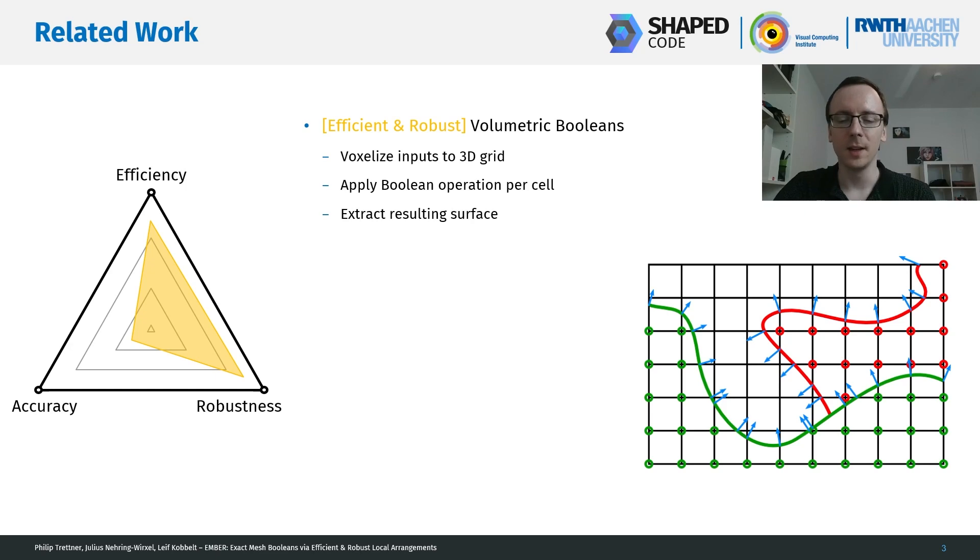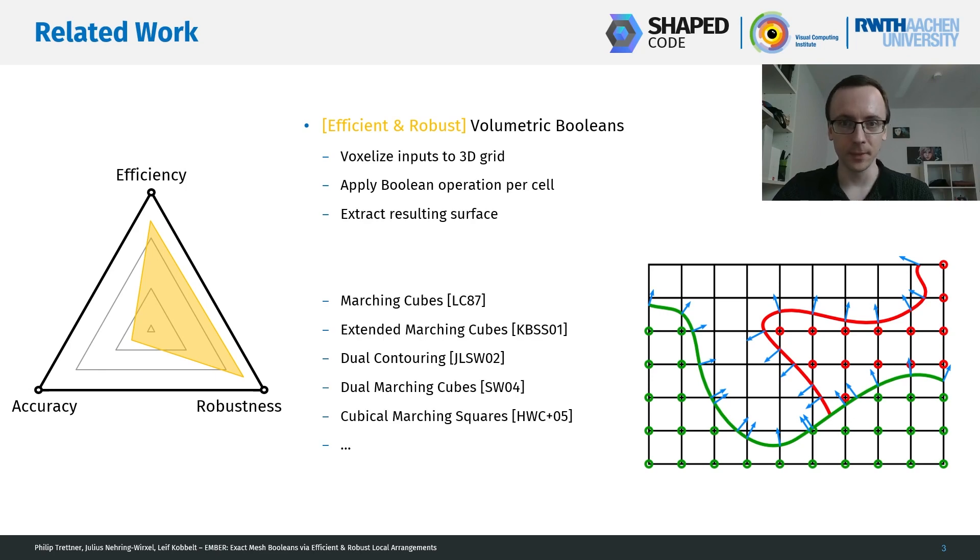This inherently discretizes the input and thus loses quite a lot of accuracy, but is in general highly efficient and also really robust. There are a lot of ways to make the resulting surface preserve some features, and there has been a lot of research in isosurface extraction over the years, but still there is a fundamental limit to accuracy due to this discretization.